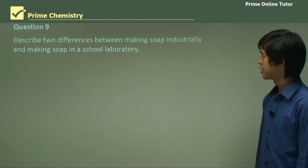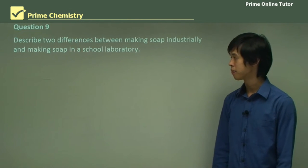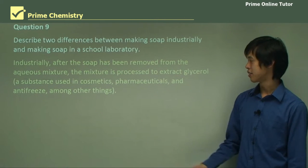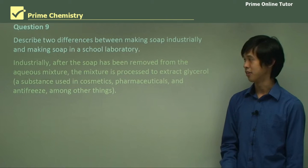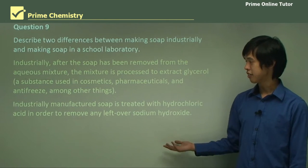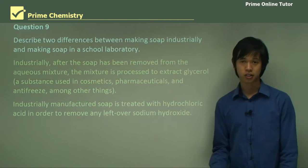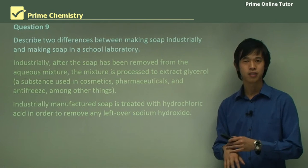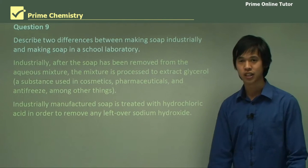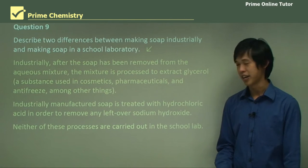Describe two differences between making soap industrially and making soap in a school laboratory. Industrially, after the soap has been removed from the aqueous mixture, the mixture is processed to extract the glycerol, which we don't do in school because we can't. Also, industrially manufactured soap is treated with hydrochloric acid to remove any leftover sodium hydroxide — since NaOH acts as a drying agent and irritates skin. Neither of these processes is carried out in school labs.